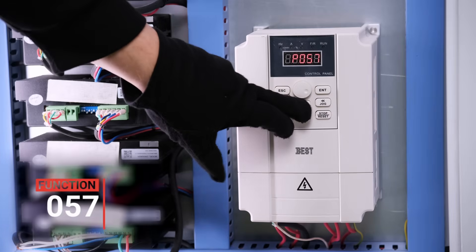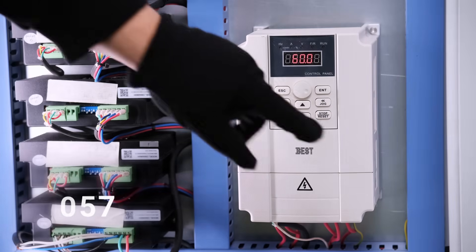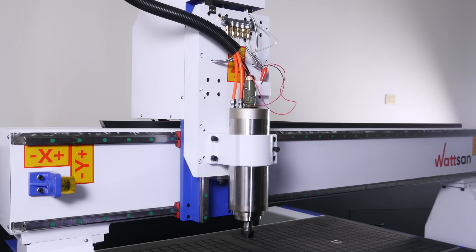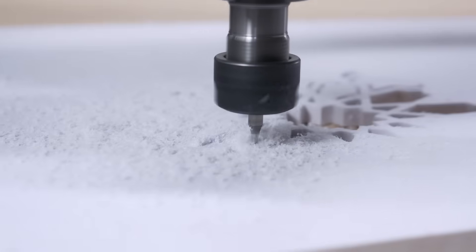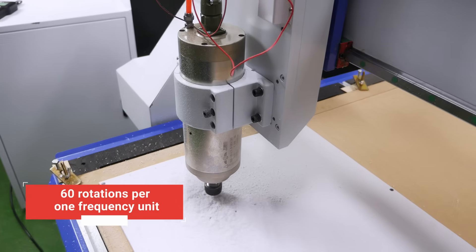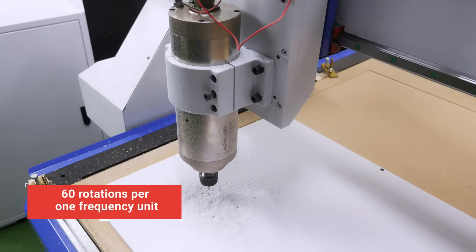Function 57. It's the amount of rotation that a spindle has to make per some frequency unit. Here, you need to calculate based on the spindle model. However, the majority of our machines will have a ratio of 60 rotations per one frequency unit.